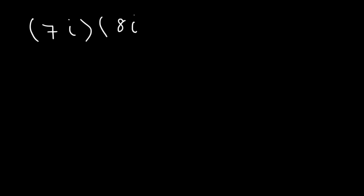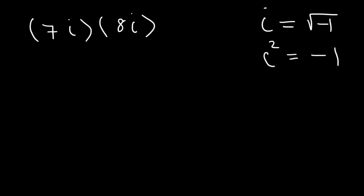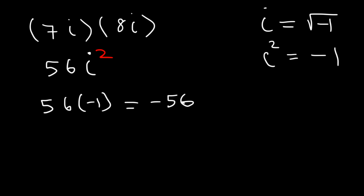What is 7i multiplied by 8i? First, make sure you know that i is equal to the square root of negative 1, and i squared is equal to negative 1. 7 times 8 is 56. i times i is i squared, and i squared is negative 1. So this is 56 times negative 1, which is negative 56. That's the answer.